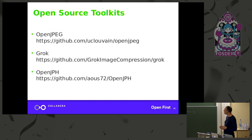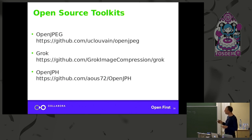These are the open source toolkits. OpenJPEG is the granddaddy of J2K toolkits. There's Grok, which is one that I maintain. And there's OpenJPH, which is only for High Throughput JPEG 2000.